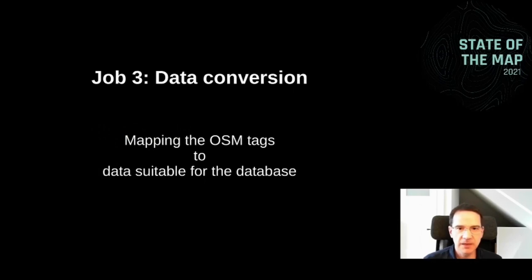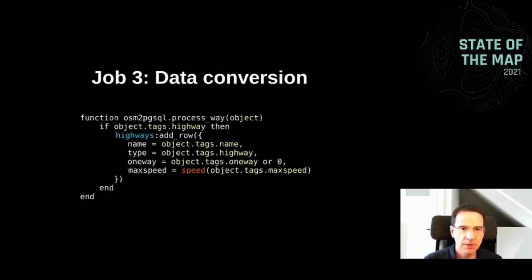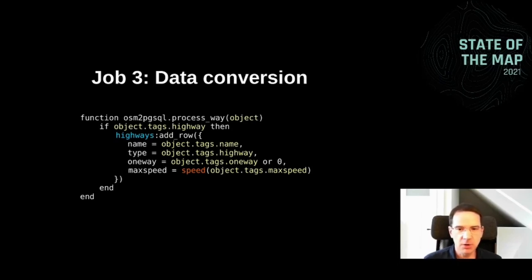The third thing we have to do is map the tags into a suitable format for the database. We take the name tag and put it in the name column, the highway tag in the type column, and the oneway tag in the oneway column — or if there's no oneway tag, we put a zero there. With the maxspeed tag it's a bit special: maxspeed can have the speed in kilometers per hour or miles per hour, and we want to convert all of this into just one number that's easy to use in the database. So we write a function called speed that does the conversion — you can provide these kinds of functions to do data conversion in a way that suits your needs.